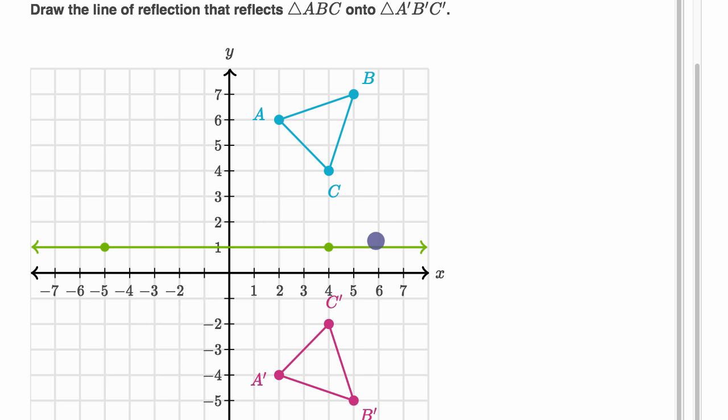We've just constructed the line of reflection that reflects the blue triangle, triangle ABC, onto triangle A prime, B prime, C prime.